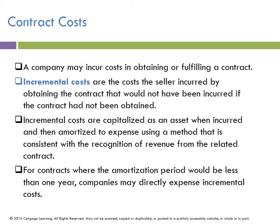Contract costs: a company may incur costs in obtaining or fulfilling a contract. Incremental costs are costs the seller incurs by obtaining the contract that would not have been incurred otherwise. Incremental costs are capitalized as an asset when incurred and amortized consistently over the contract period. For contracts where the amortization period would be less than one year, just expense it. If the contract lasts five years, amortize those incremental costs over five years — debit an expense and credit the contract cost asset.